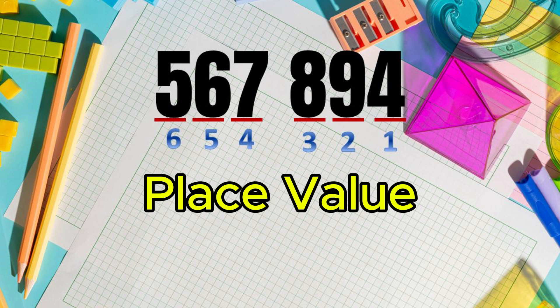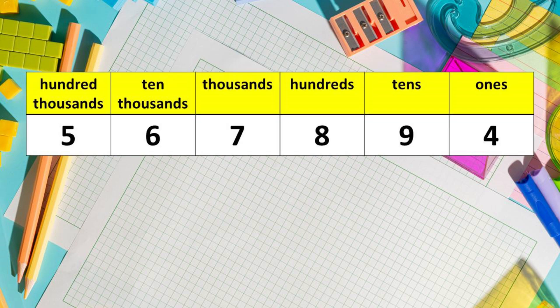So, what is the place value of each digit? Let's study this chart. The words on top of each digit or number are called place values. Kids, you can easily familiarize the place value by reading it from right to left. That means when you name the place value, start from right to left.